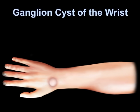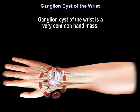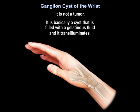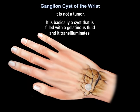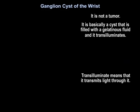Ganglion cyst of the wrist is a very common hand mass. It is not a tumor — it is basically a cyst filled with a gelatinous fluid, and it transilluminates, meaning it transmits light through it.